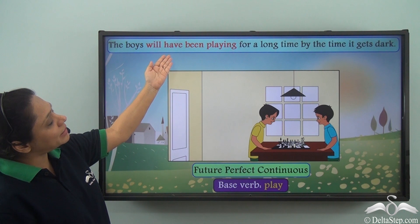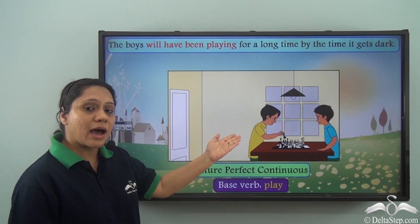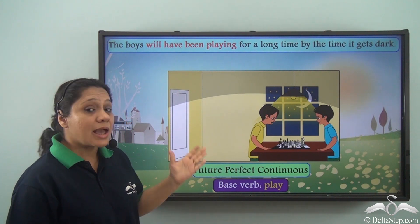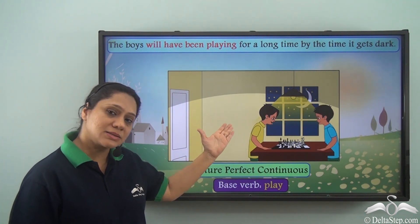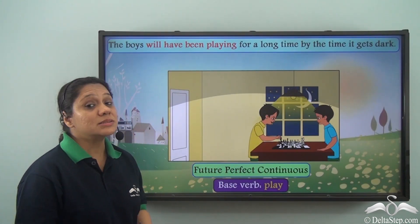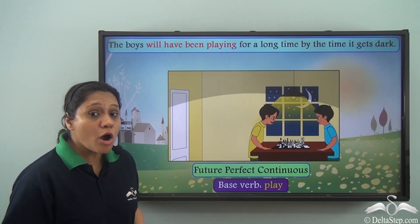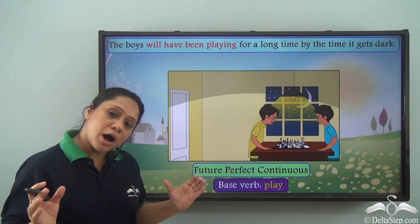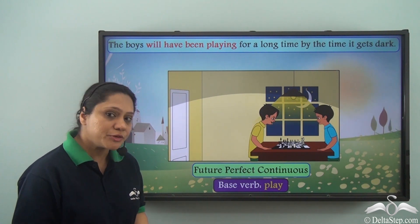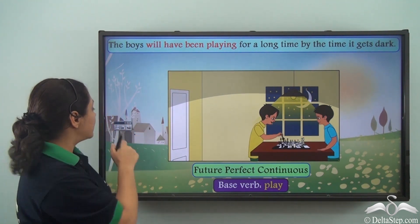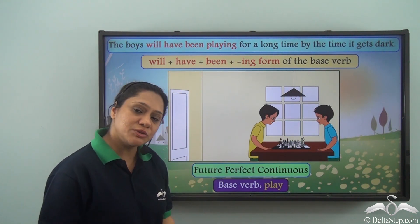The boys will have been playing for a long time by the time it gets dark. The boys are having a long game of chess and then it gets dark — all the while they will be playing till it gets dark. So the future perfect continuous tense tells us that an action which has started in the past, present, or future will continue for a period of time and will be in progress at a particular point in the future. The verb 'will have been playing' is formed by using 'will' with 'have', 'been', and the -ing form of the base verb.